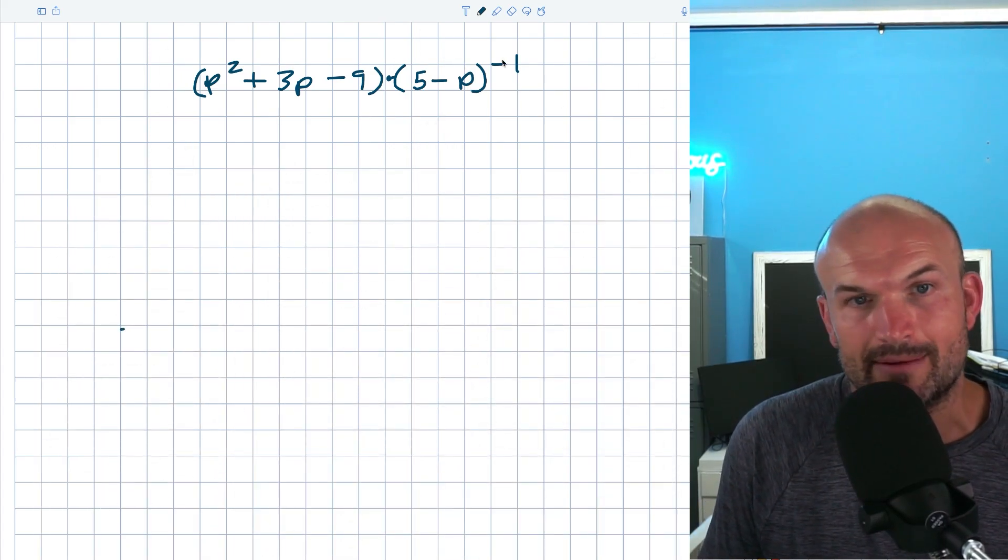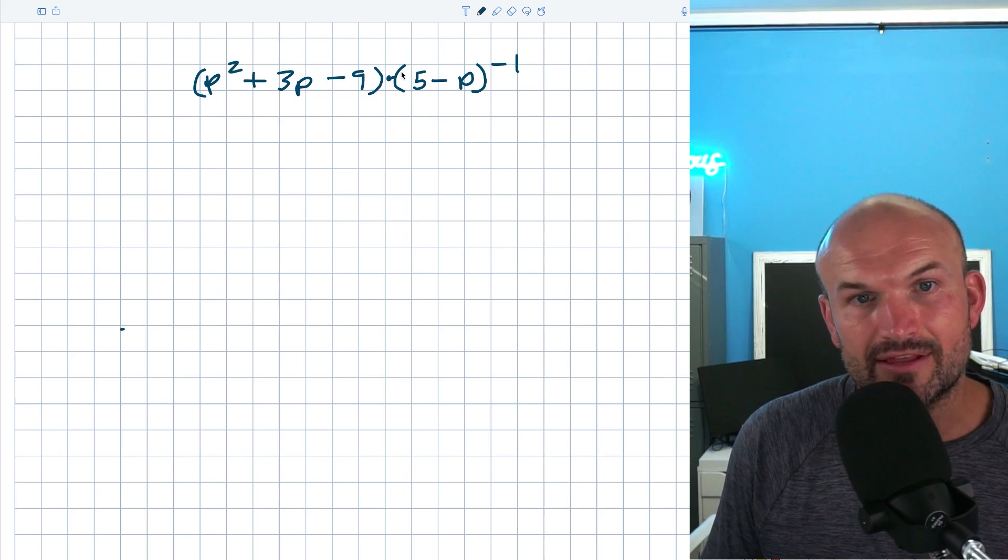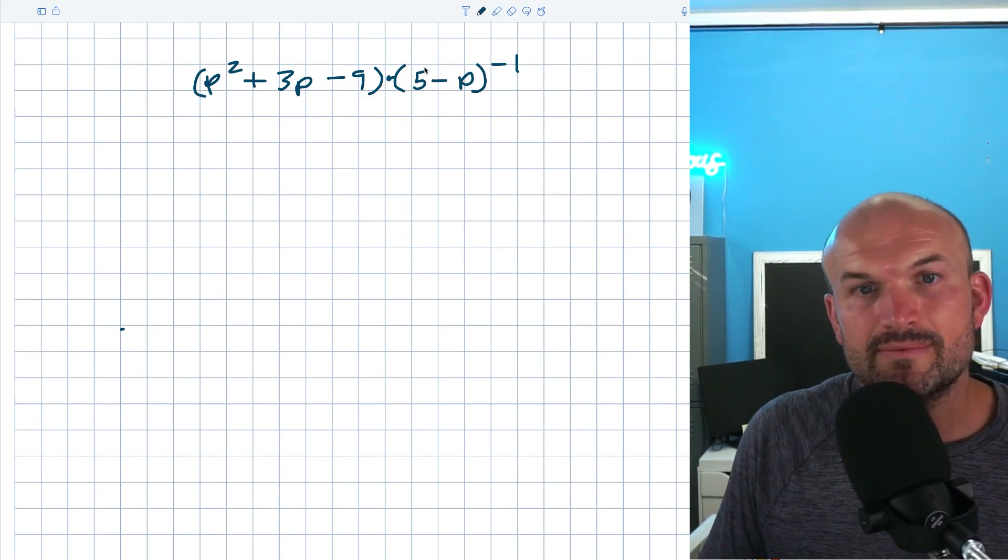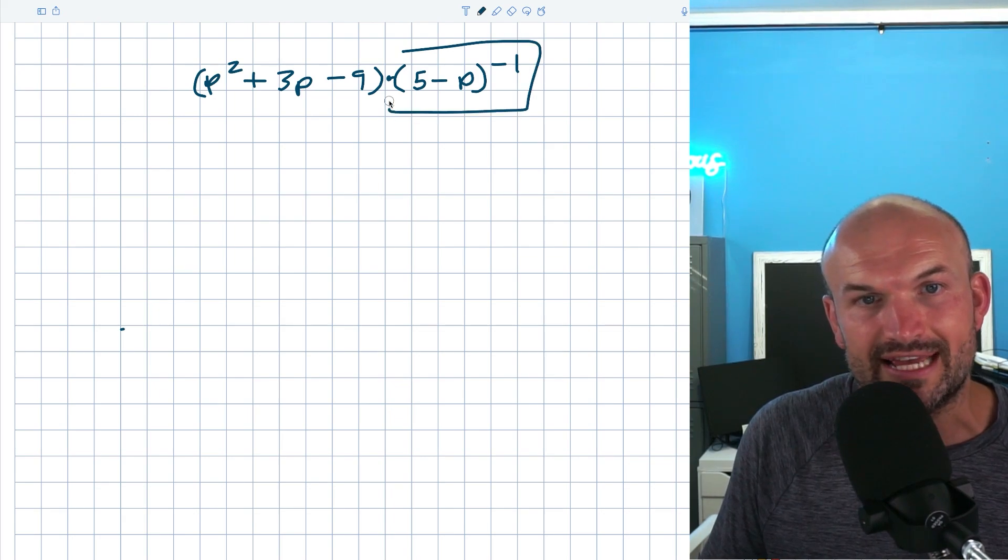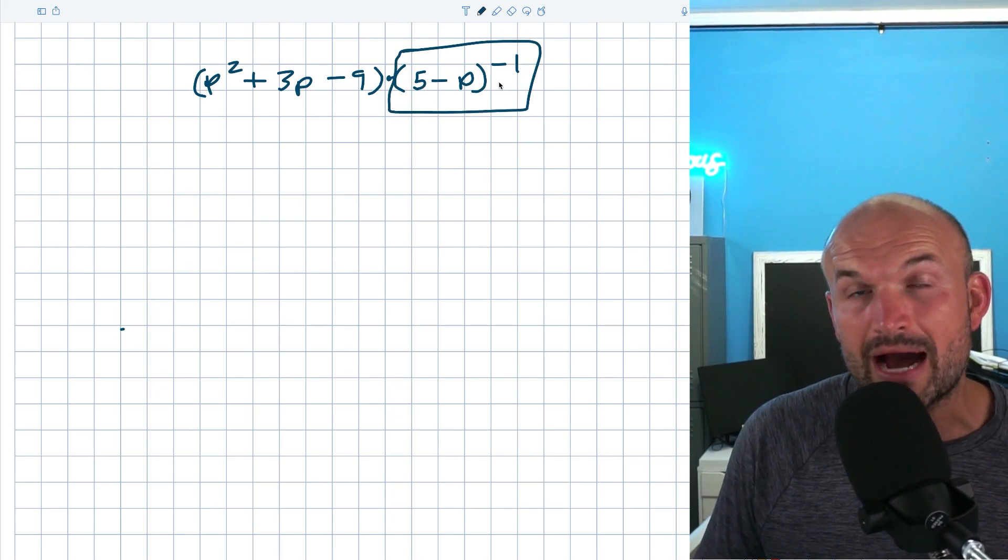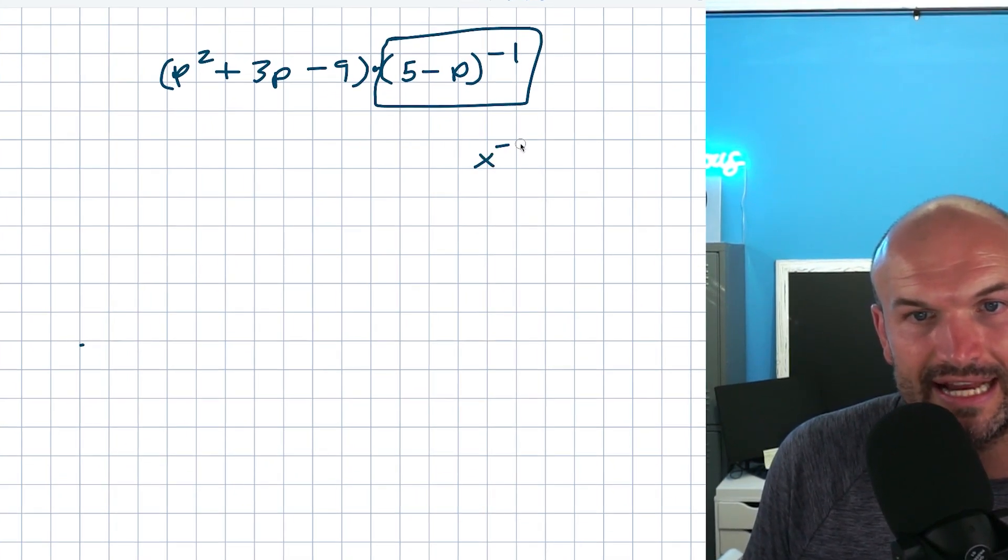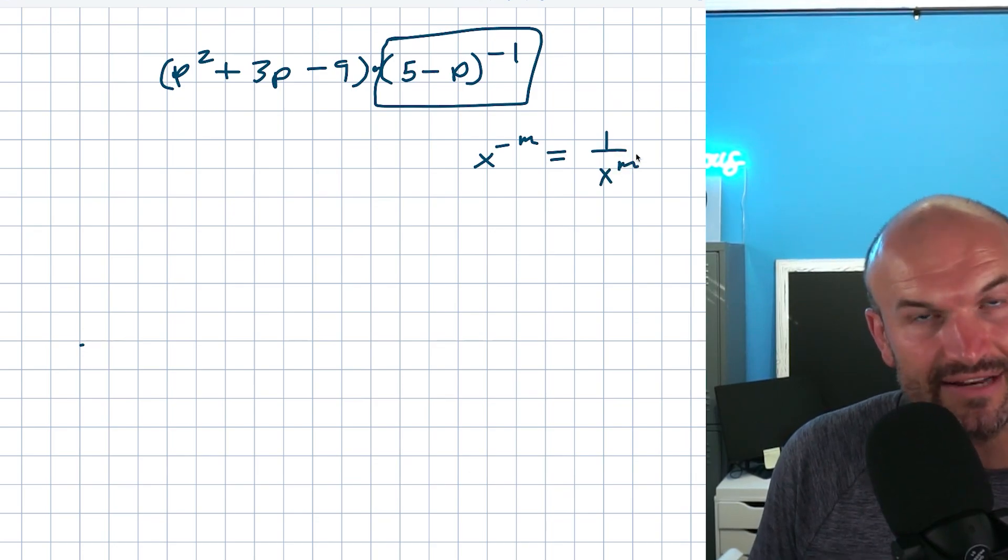So the first thing I think students need to understand about this problem is it is a division problem. Now, they might see the multiplication between their two terms and they recognize, well, how is this a division problem? So the main thing we need to understand here at first is whenever we have a term raised to a negative power, that really means that's actually supposed to be in the denominator. Because remember our exponent rules, if I have x to the negative m, then that can be the same thing as 1 over x to the positive m.